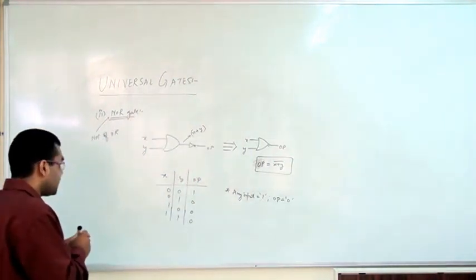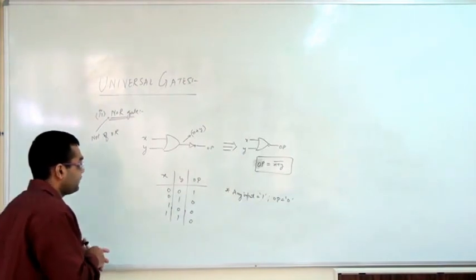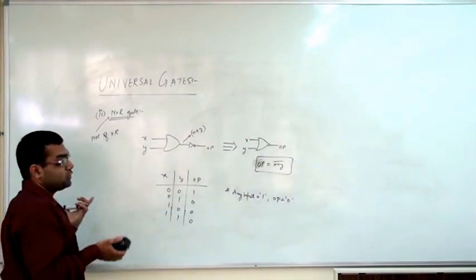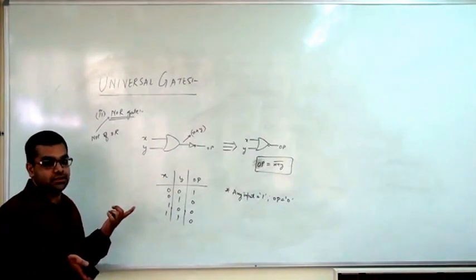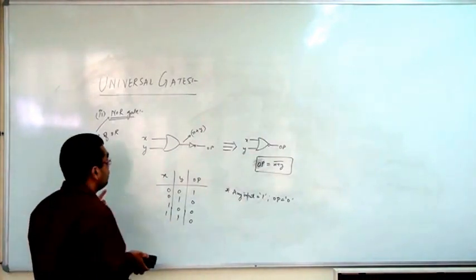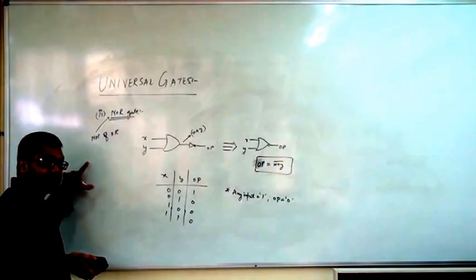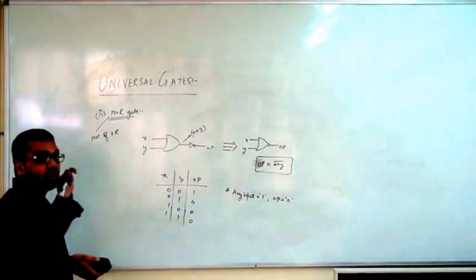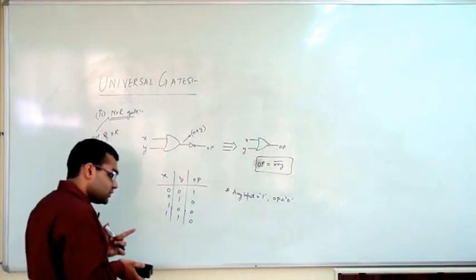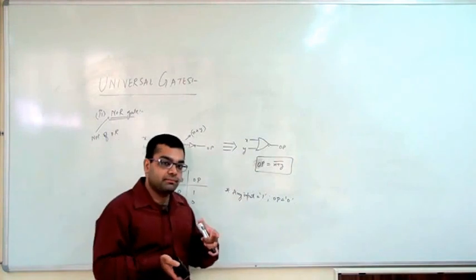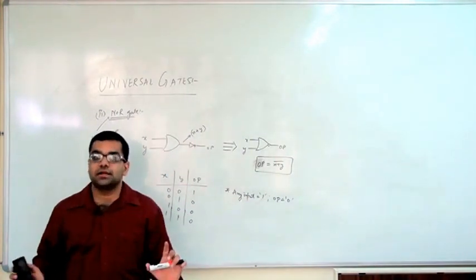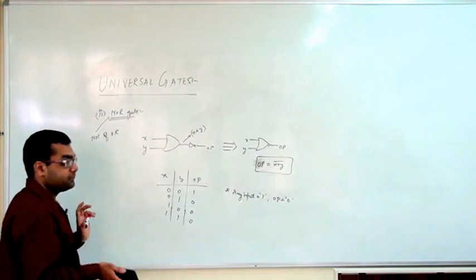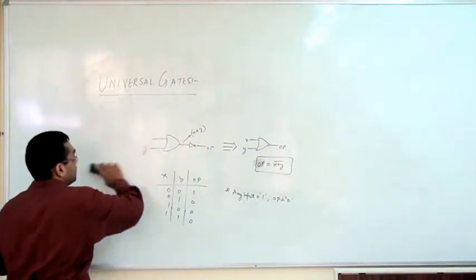Now the question comes: why are they actually called the universal gates? Because we will see that by use of these universal gates we can construct the basic gates AND, OR, and NOT. And once you construct the basic gates you can implement any circuit using these gates only. Let us see how.